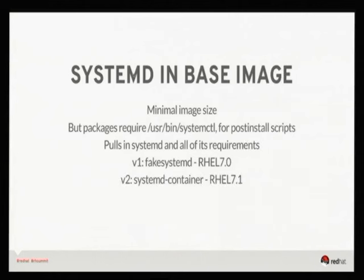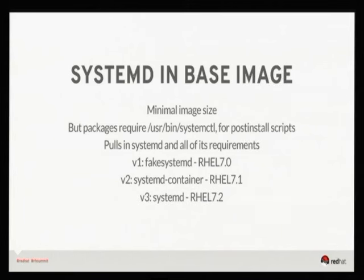We shipped fake-systemd in RHEL 7.0. In RHEL 7.1 I worked with Lucas and friends on the RHEL team to get a systemd that didn't bring in all the extra stuff — he rebuilt systemd called systemd-container. The problem was Leonard hated that too. In RHEL 7.2 we have real systemd inside the container, but with fewer sub-package requirements. systemd has gotten a lot smaller. As of RHEL 7.2 we are shipping real systemd in the base container, and Fedora and CentOS are doing the same.